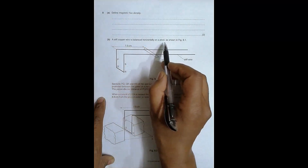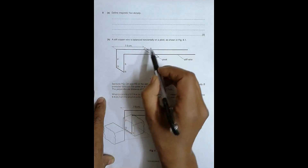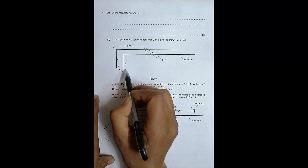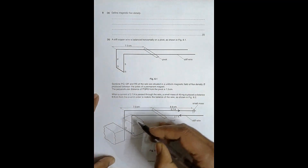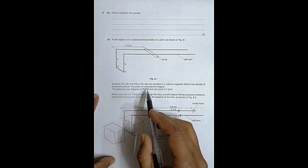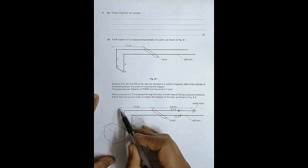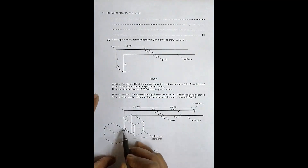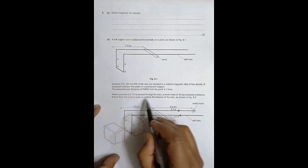Question B says that a stiff copper wire is balanced horizontally on a pivot. The sections PQ, QR, and RS of the wire are situated in a uniform field of flux density B. The direction of B is not given — we have to find it — between the poles of a permanent magnet. The perpendicular distance of PQ and RS from the pivot is 7.5 cm.